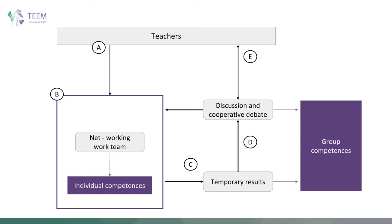In phase A, the teachers explain the objectives of each phase and the necessary resources. In phase B, the members of the work team interact through networking to perform each phase. In phase C, the work teams upload the provisional results to an online storage system visible to everyone — students and teachers. In phase D, in synchronous session common to all participating teams, the results of each phase are analyzed together with teachers. During these sessions or later, the results are modified and the new improved result is the one that is delivered.